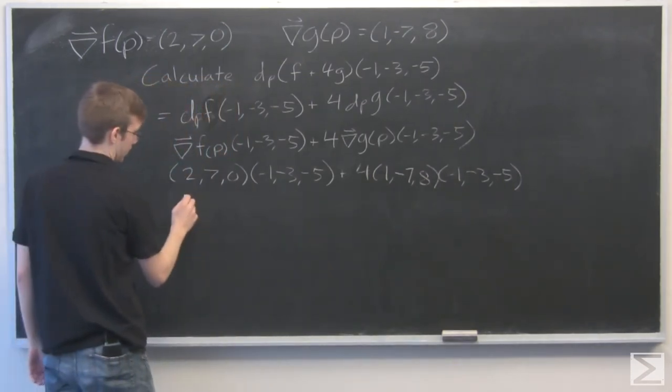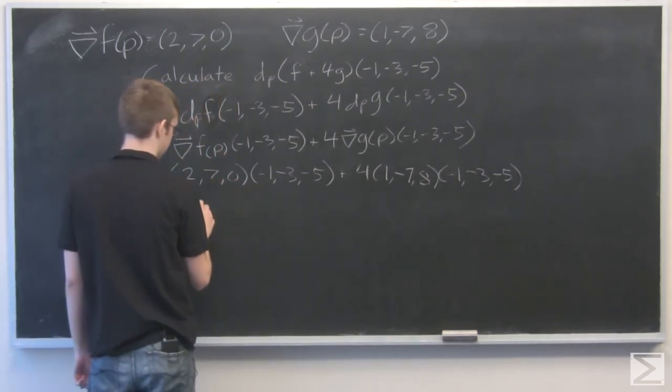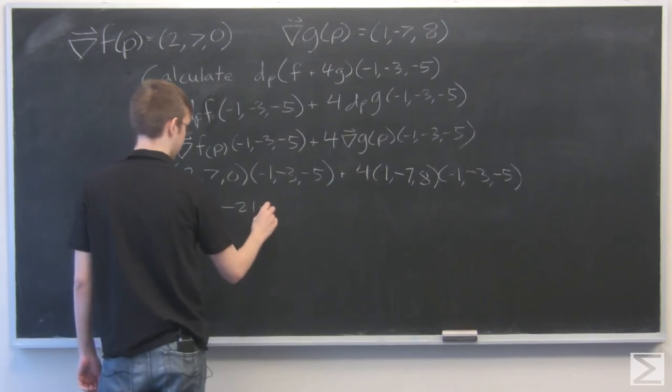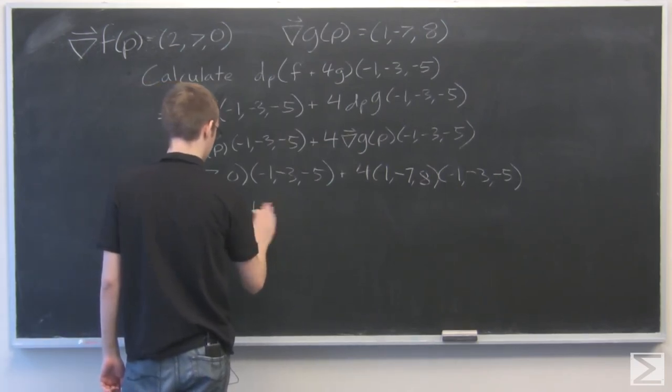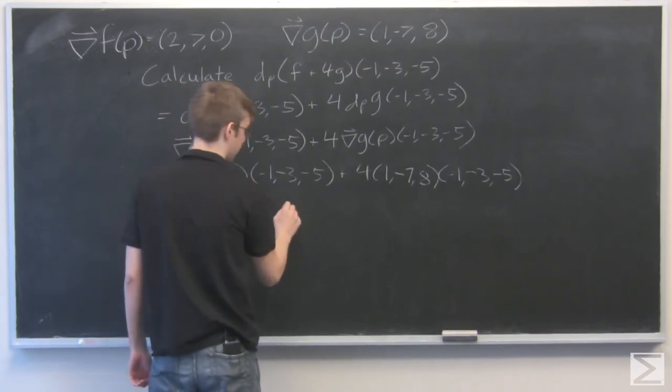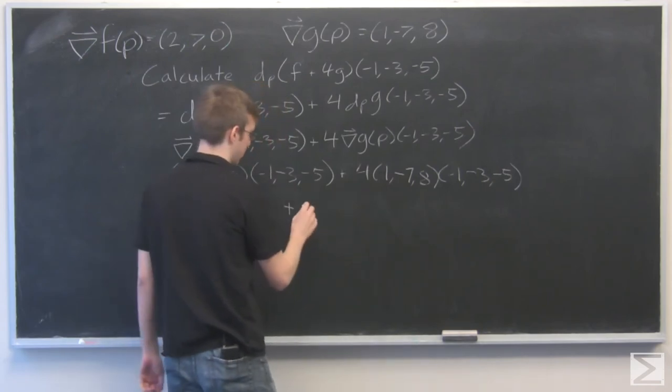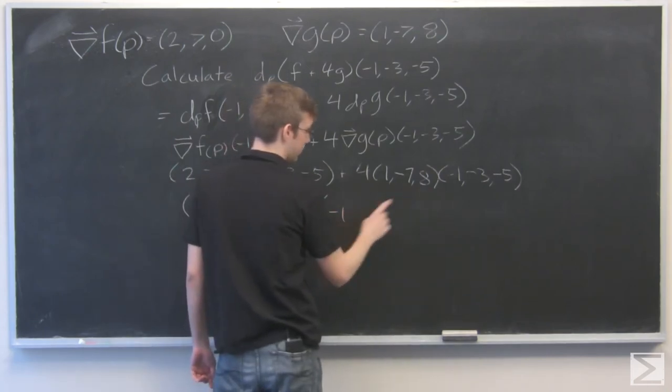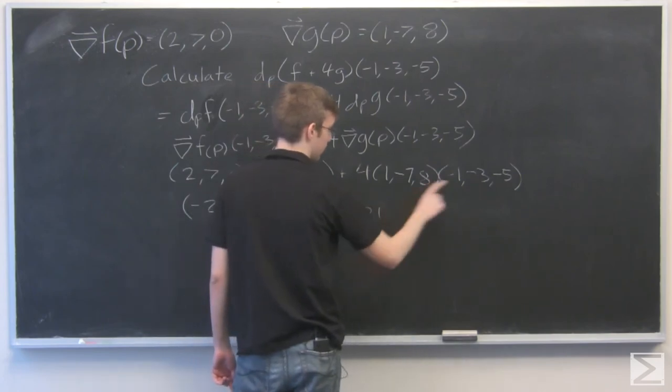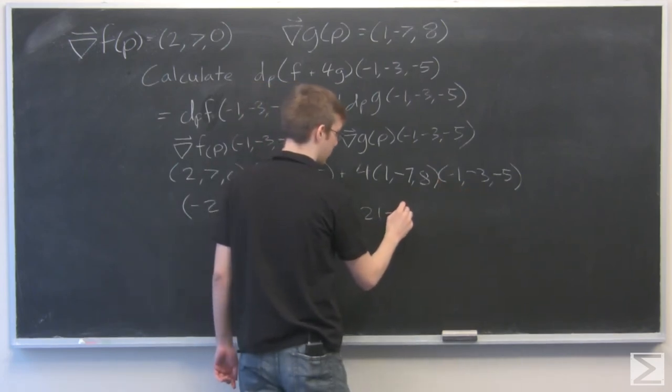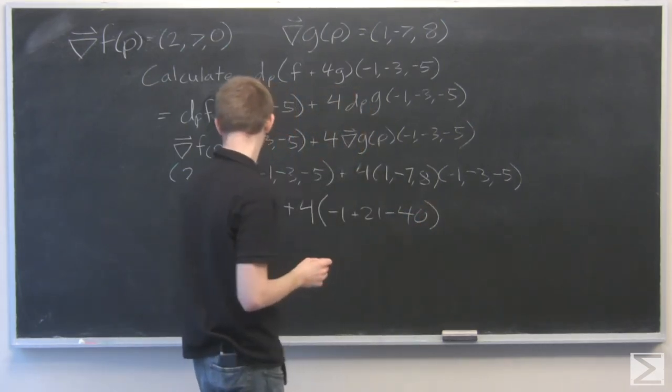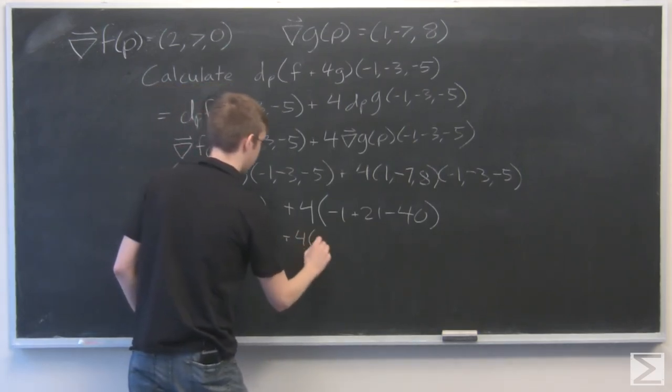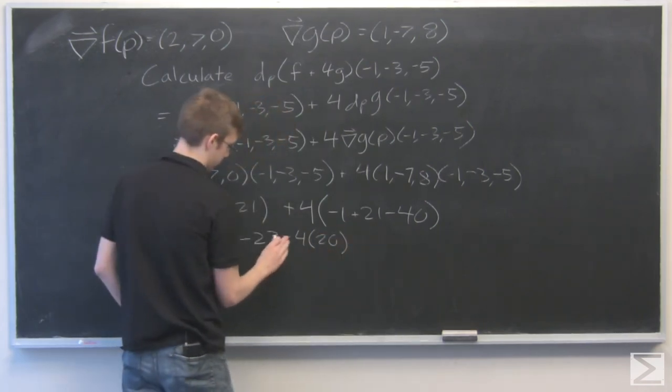All right, now we just have to solve this. So that's minus 2 minus 21, and minus 0, plus, I'm going to distribute the 4 first. No, I'm going to do the dot product first. 4 times minus 1, minus 7 times minus 3 is plus 21, and 8 times negative 5 is minus 40. And that simplifies to minus 23 plus 4 times minus 20.